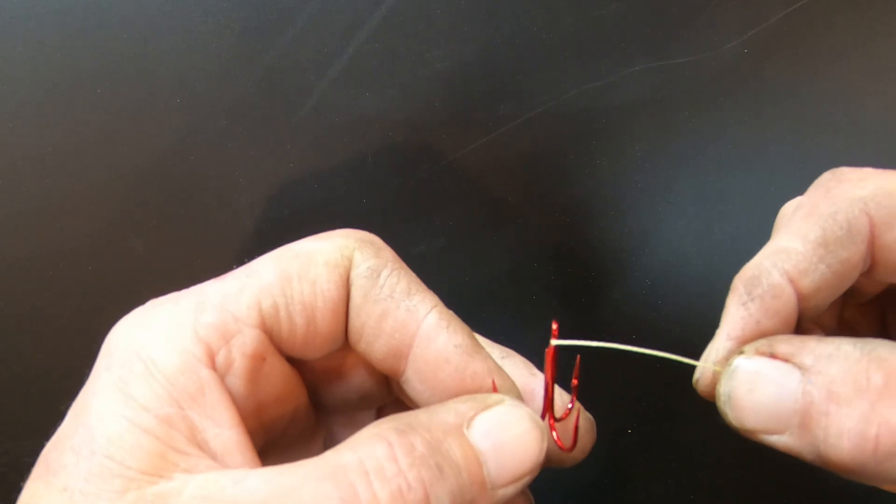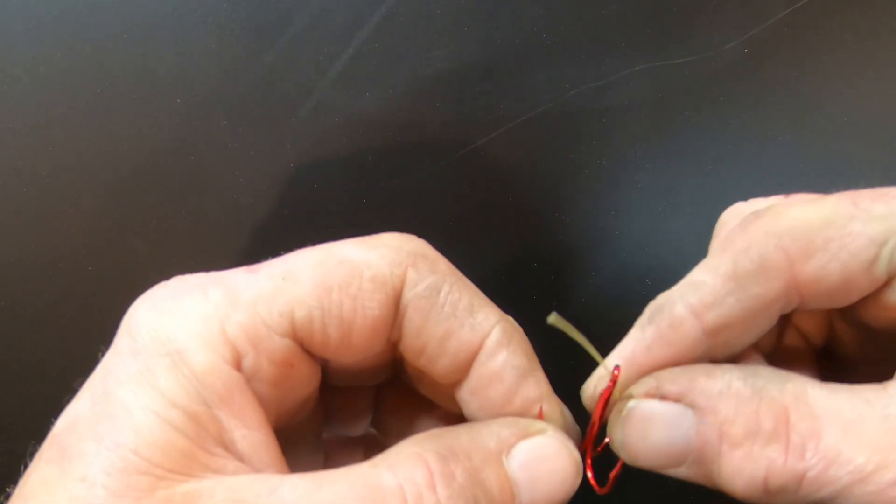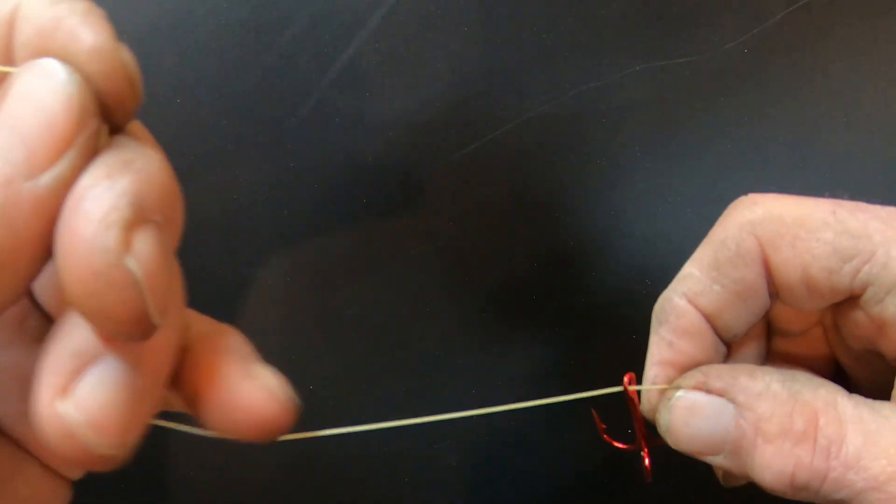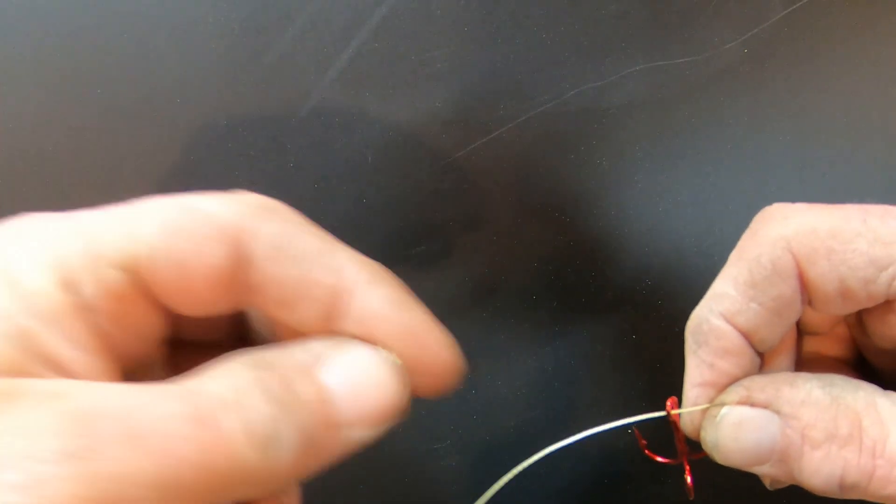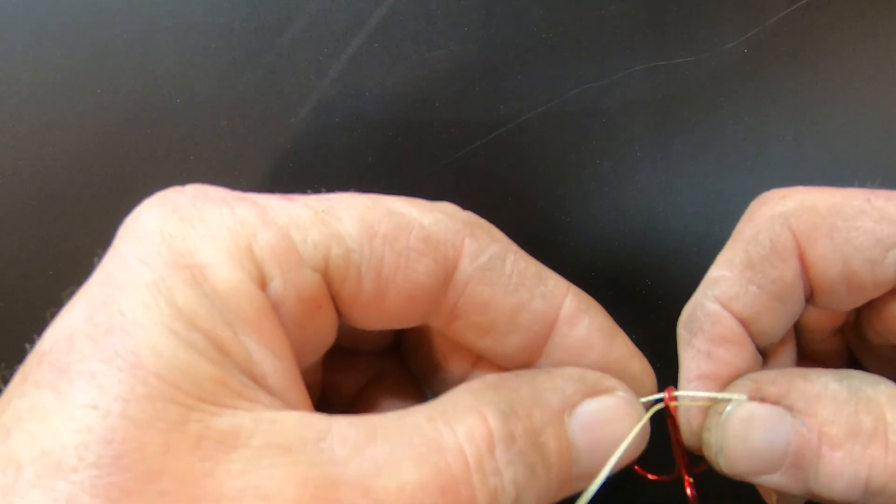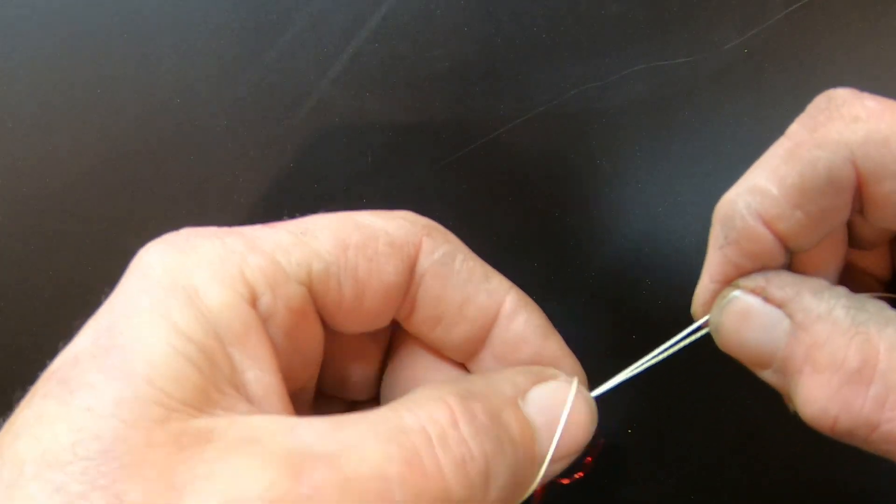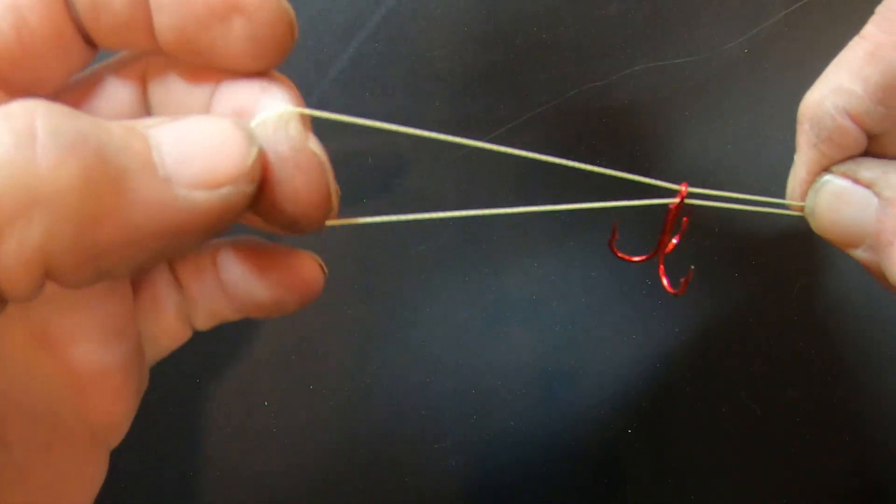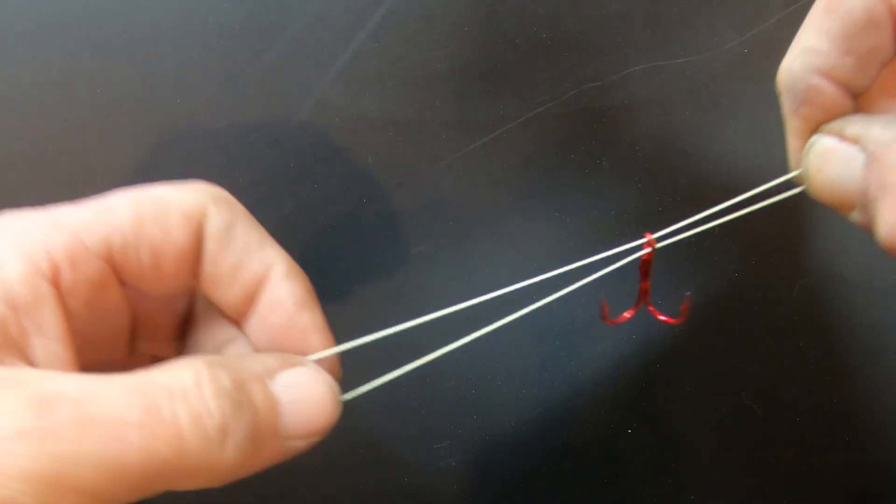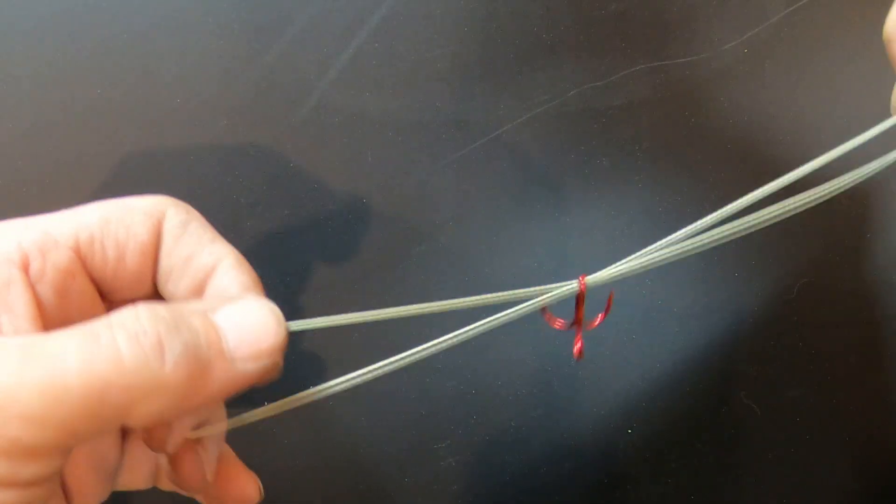And that's called the lead. The lead is the first part. Give yourself a little room, go back through the eye with the lead again until it looks like this. Give yourself plenty of room.